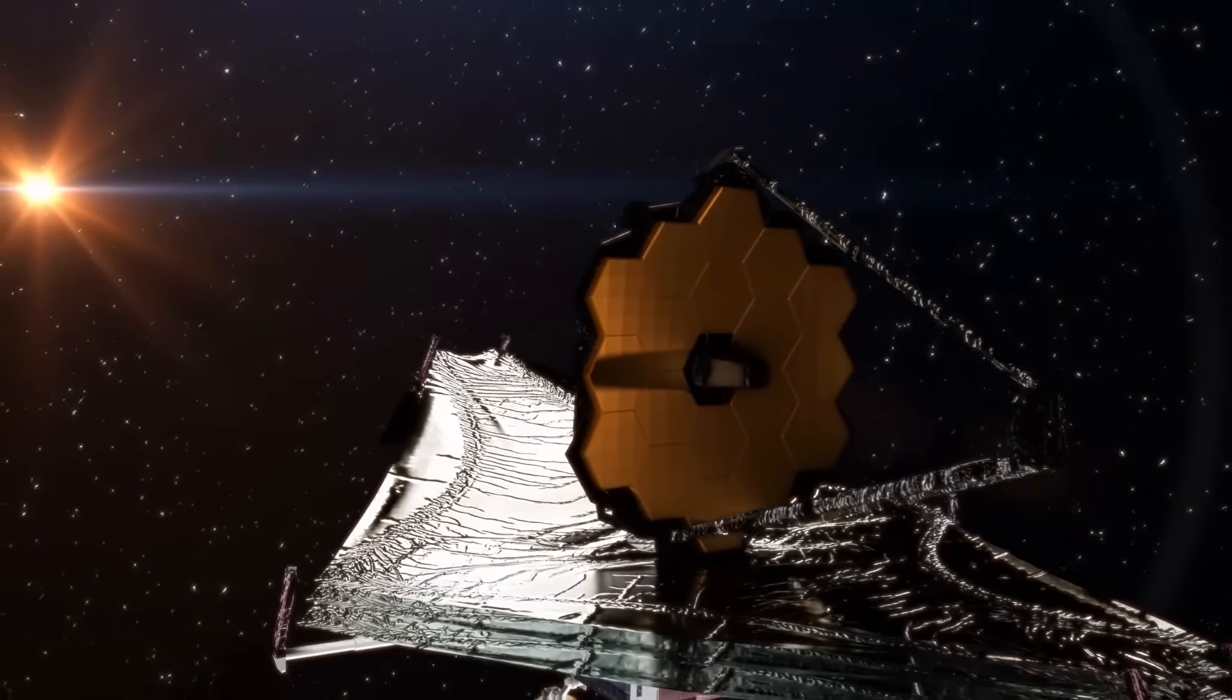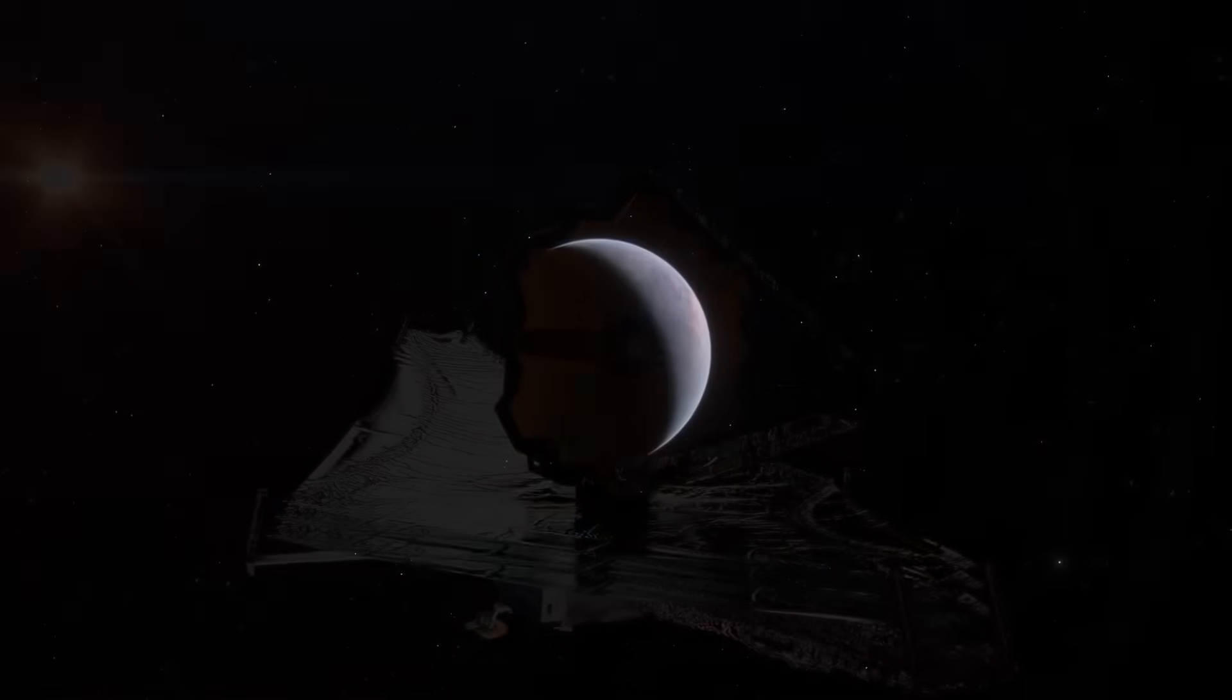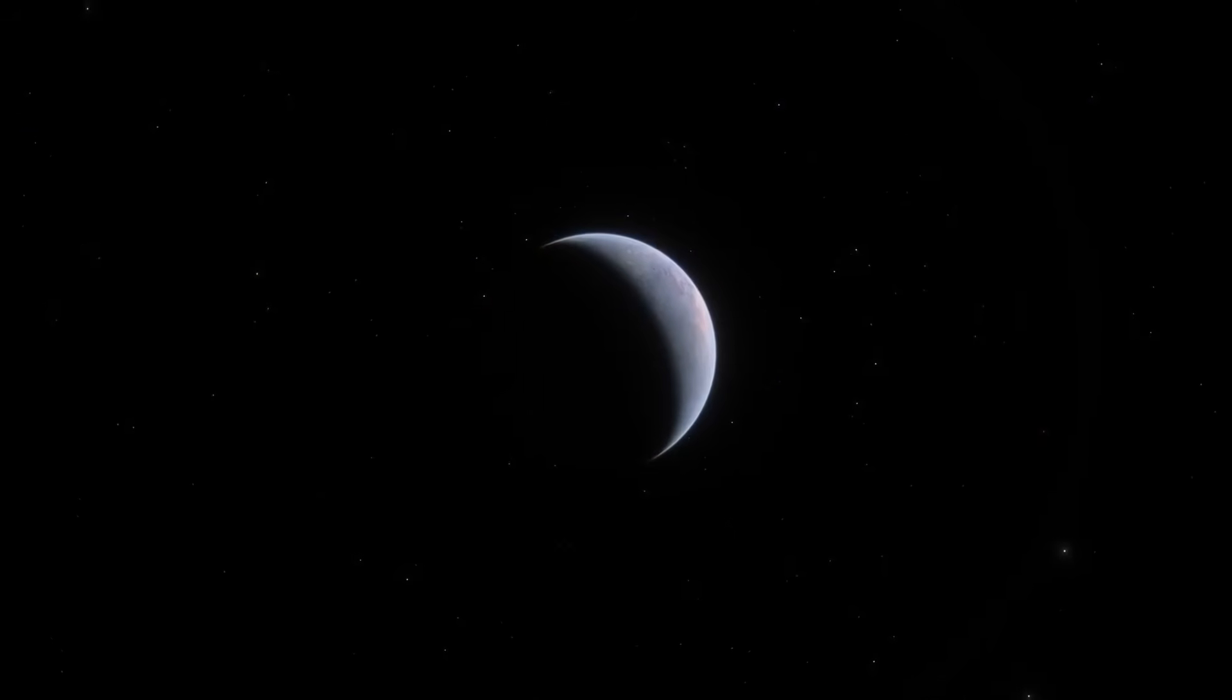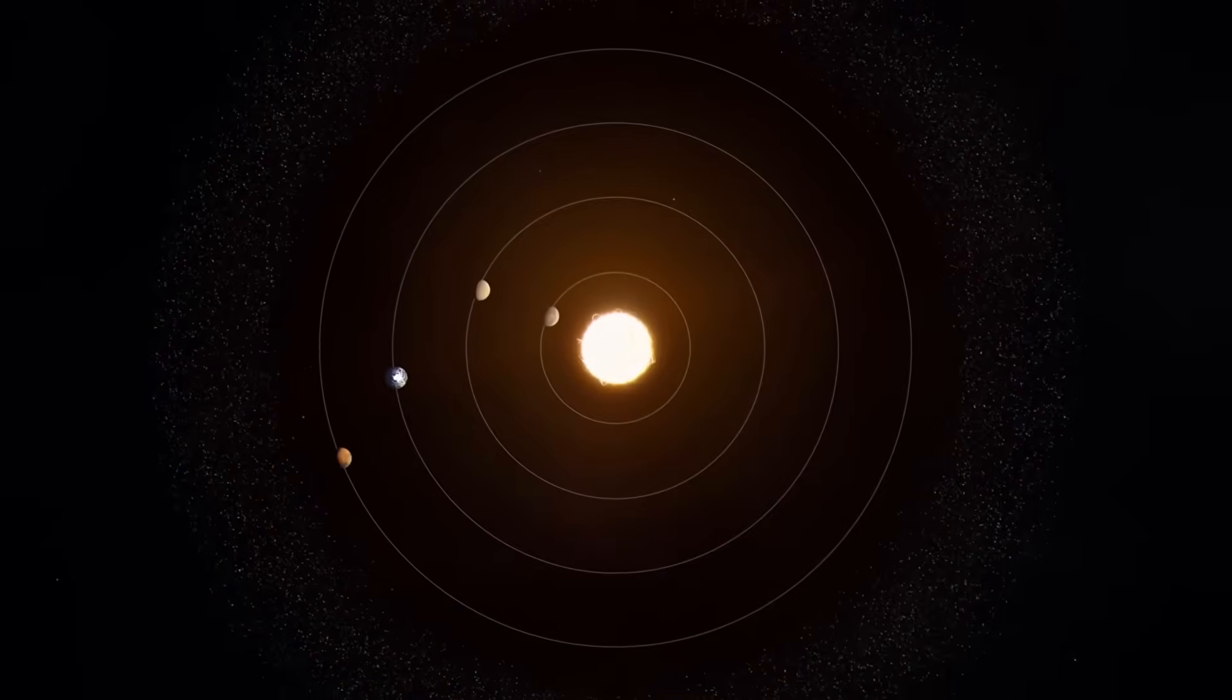How does a black hole get that big in that short a time? Our standard theories say it should take hundreds of millions, maybe billions, of years to grow a black hole that size. Yet here it was, staring at us from the edge of the observable universe.